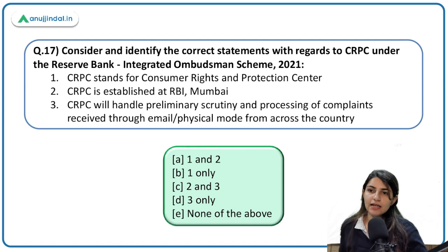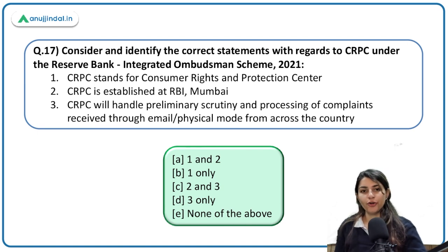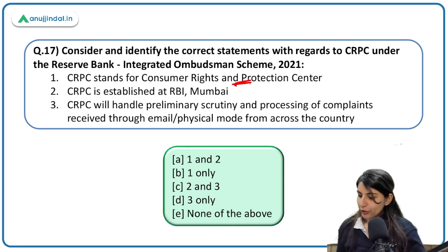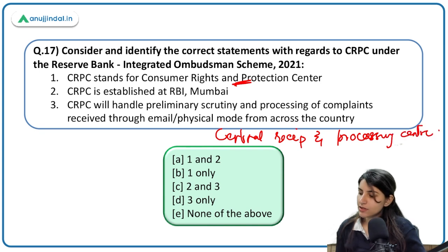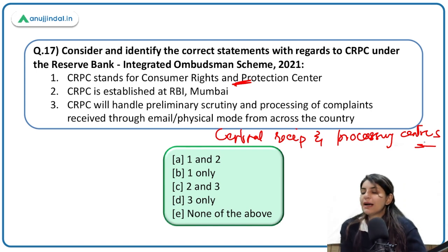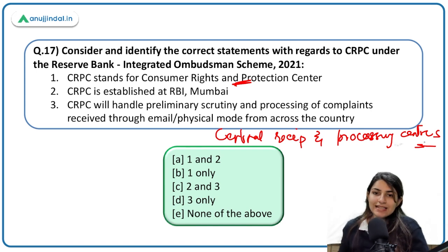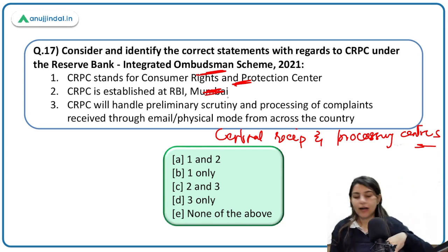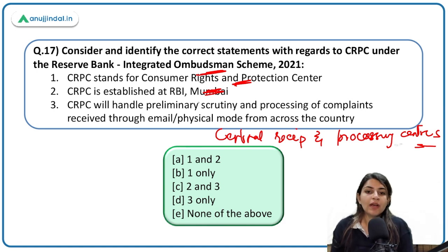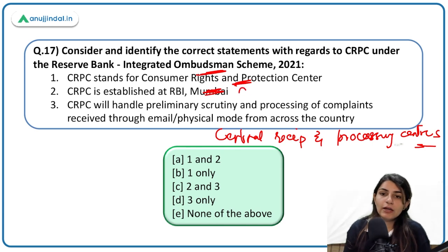Regarding CRPC under the Reserve Bank Integrated Ombudsman Scheme: CRPC stands for Central Receipt and Processing Center — not Consumer Rights and Protection Center. It is an organization that receives all complaints from across the country. CRPC was established at RBI Chandigarh — not Mumbai. CRPC handles preliminary scrutiny, processing of complaints received through email and physical mode from across the country — this statement is correct.